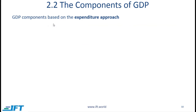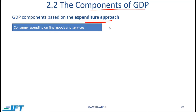We will now look at the components of GDP based on the expenditure approach. The first component is consumer spending on final goods and services, often denoted by the symbol C.